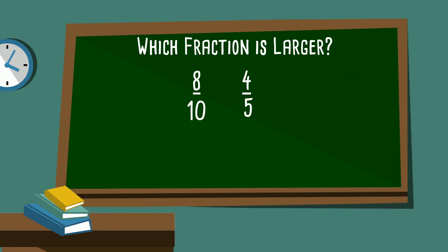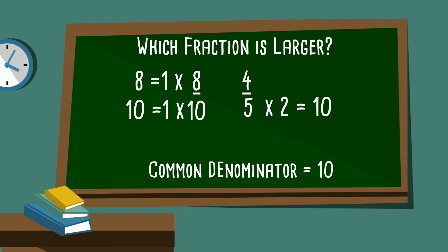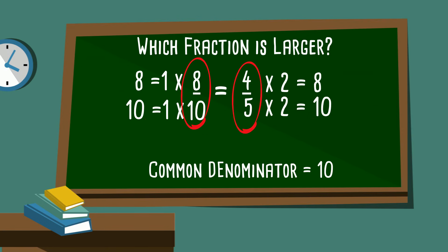How about eight-tenths and four-fifths? Again, I need to rename the fractions. The common denominator of ten and five is ten. Ten goes into ten one time, so ten times one is ten, and eight times one is eight. On the other side, five goes into ten two times, so five times two is ten, and four times two is eight. Now we have two fractions with a common denominator, but you'll notice these two fractions are equal — they're actually equivalent fractions. So eight-tenths is equal to four-fifths.